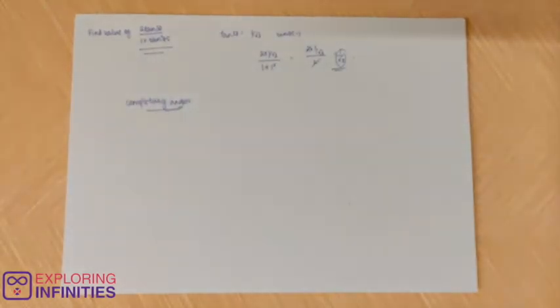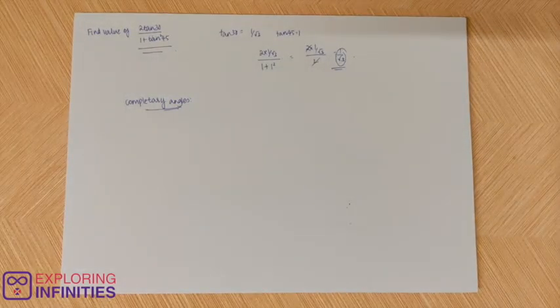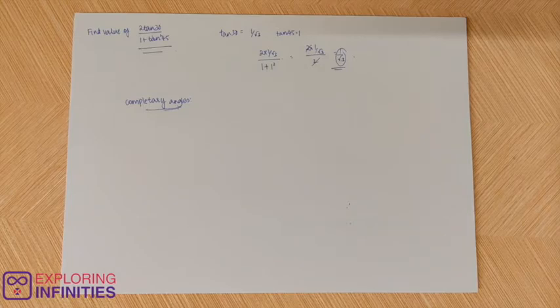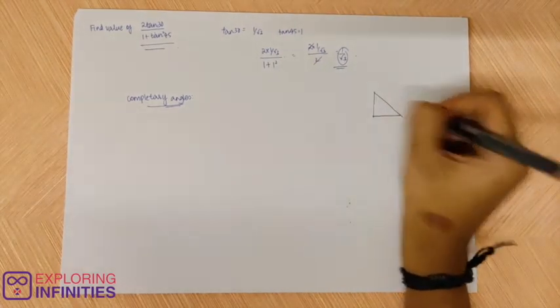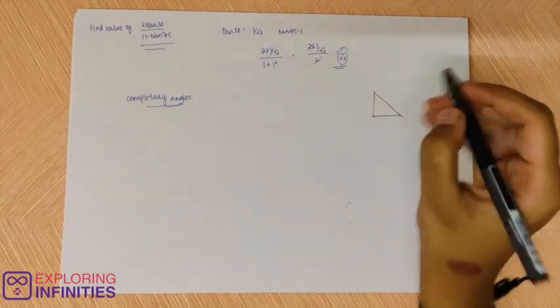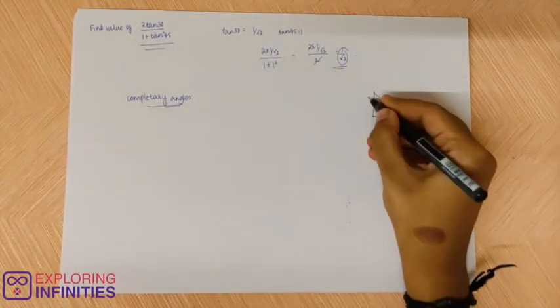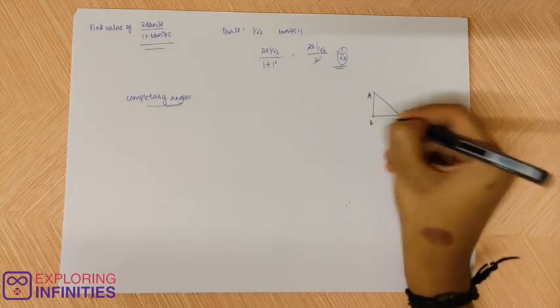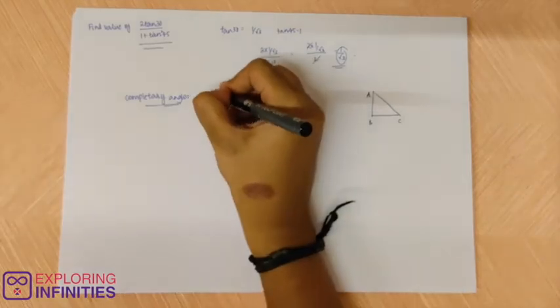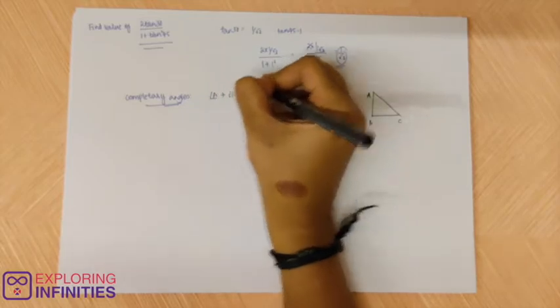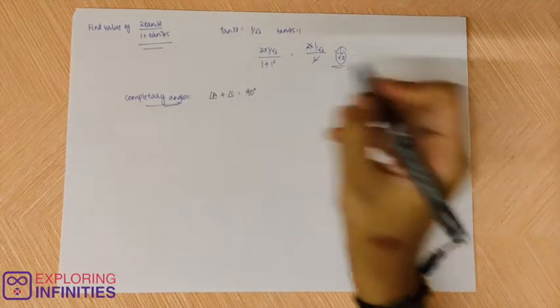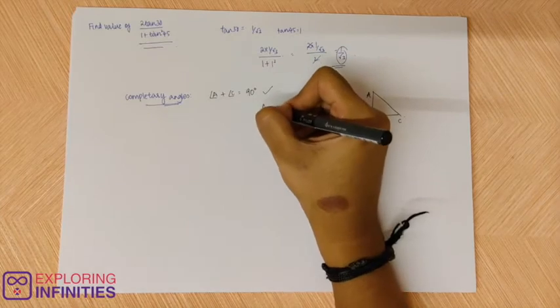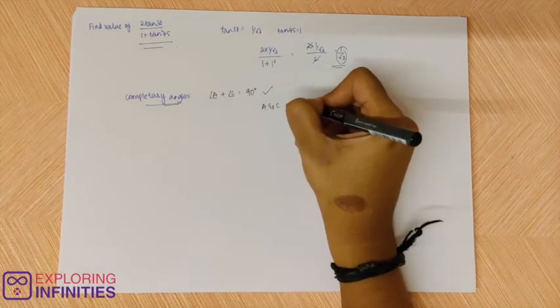Complementary angles are angles whose sum is 90 degrees, so if there are two angles their sum should be 90 degrees. So if this is ABC then angle A plus angle C is 90 degrees, because this is a right angle triangle. So that means angle A and C are complementary.